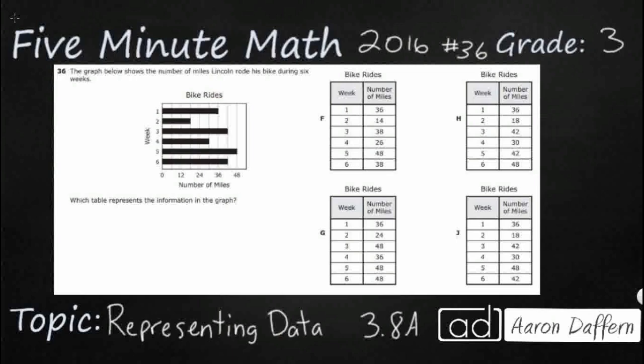So, we have a bar graph and some tables over here that we need to match up. The graph tells us that Lincoln is riding his bike over six weeks. Looks like he is riding his bike an awful lot. We need to find the table that best represents the information in this graph. The only trick here is that this graph has some missing numbers. So you see we go from zero, and we've got a line there, and then it goes to 12. So it looks like we are skip counting by 12. But we need to fill in those missing numbers, and then go ahead and just put a number next to each of these.